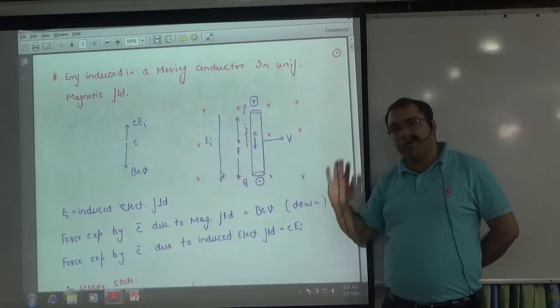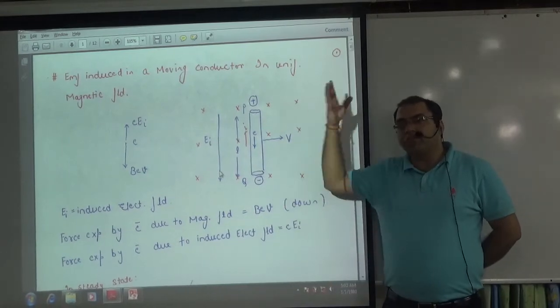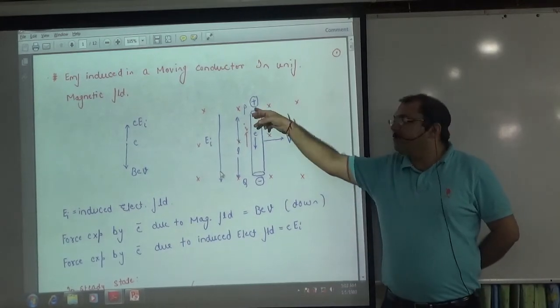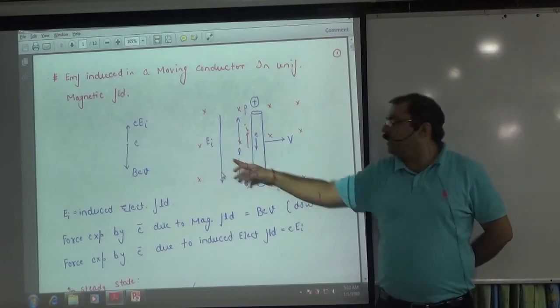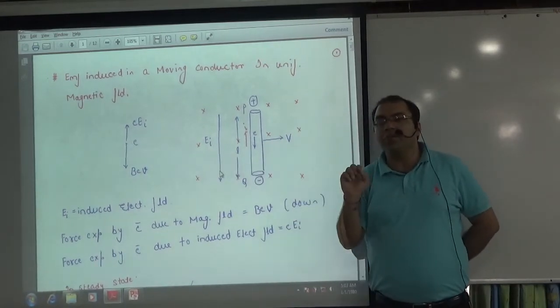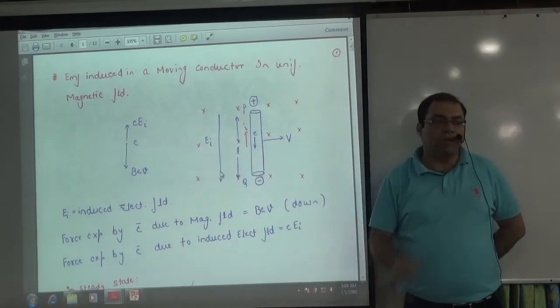For a little while, electron will fall down. Minus plus charge will fall down. Electric field will develop from plus to minus, EI. EI means induced electric field.